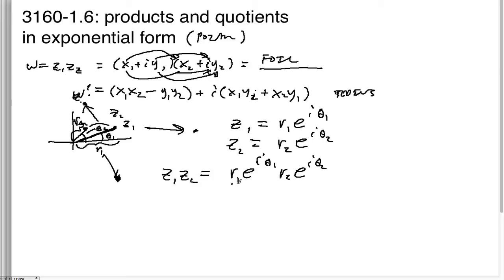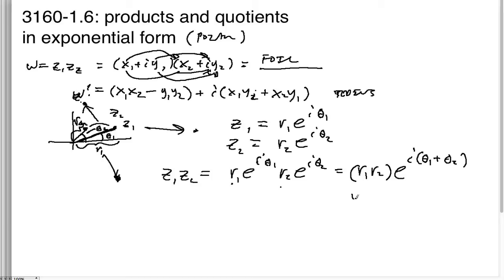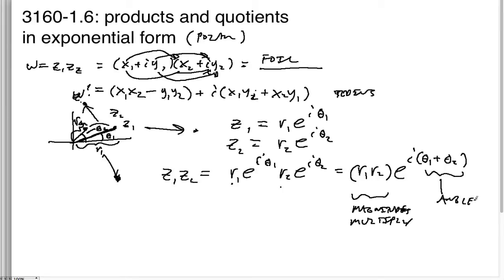We know that these two real numbers multiply together to give r1·r2, which represents the new magnitude of our product. And we know that exponents sum, so we get e^{i(θ1+θ2)}. This gives us a really nice, clean result: magnitudes multiply and angles sum.